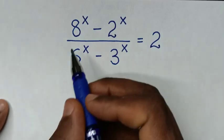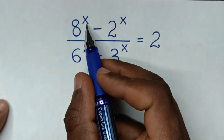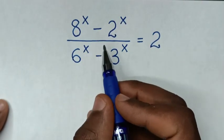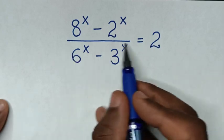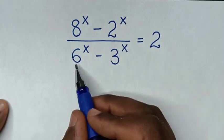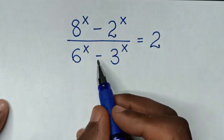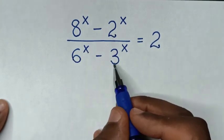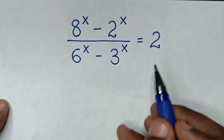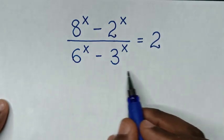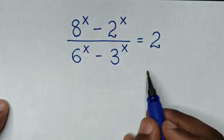Hello! How to solve (8^x minus 2^x) over (6^x minus 3^x) equals 2? To find the value of x from this equation.